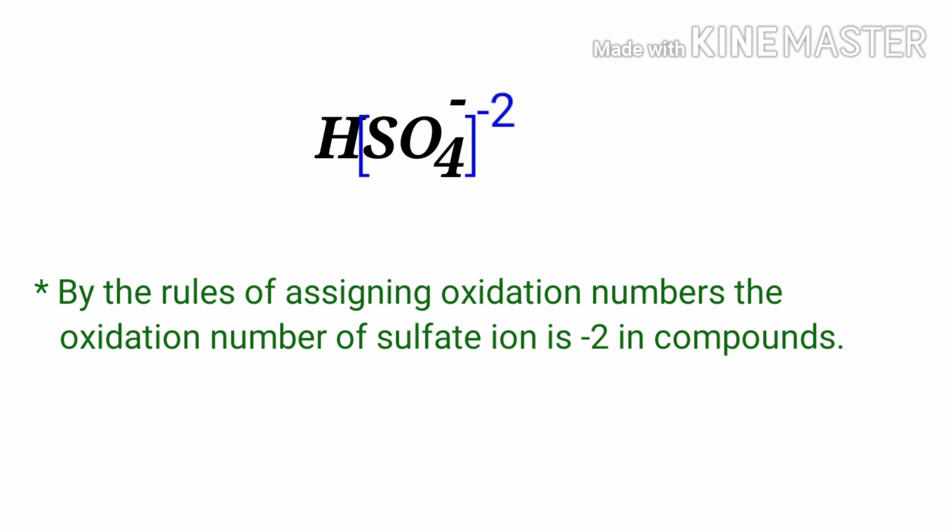Since oxygen has oxidation number of minus two and sulfur has oxidation number of plus six, we can write the oxidation number of the atom above its symbol and the total oxidation number of the element below its symbol.